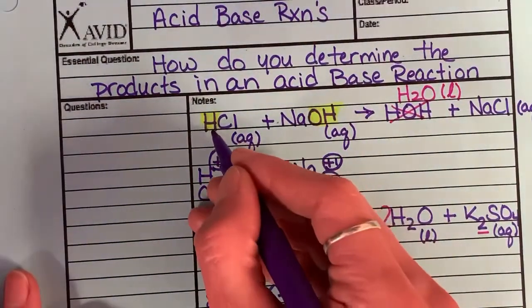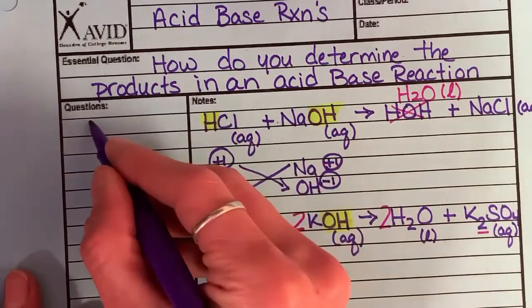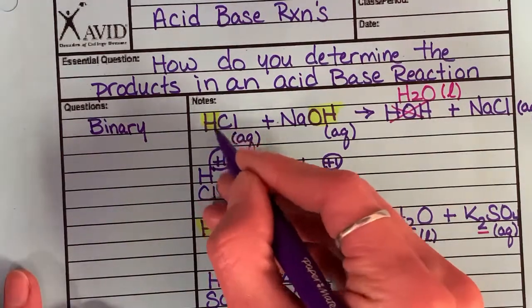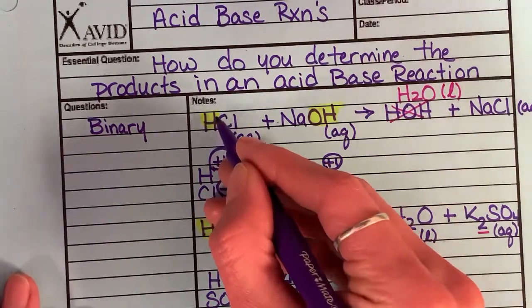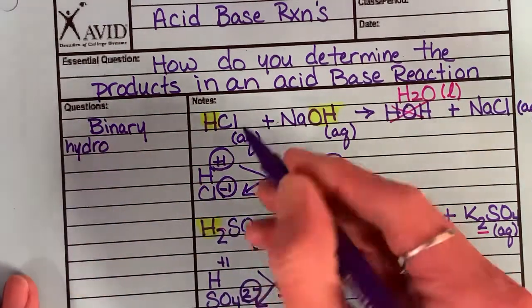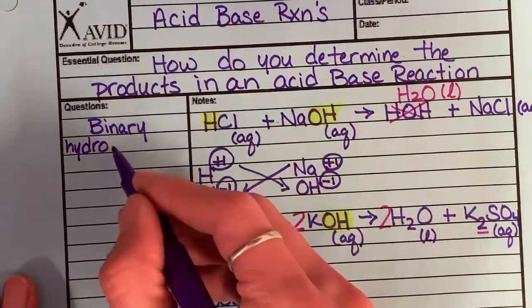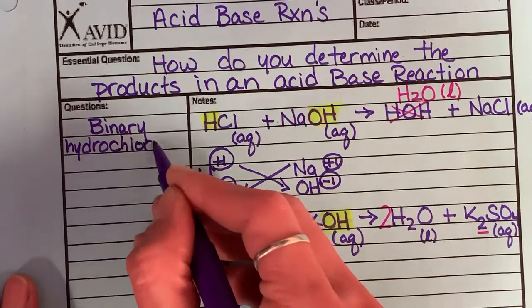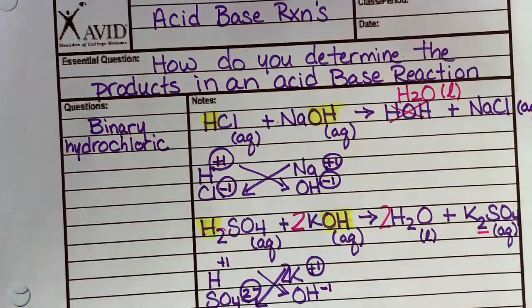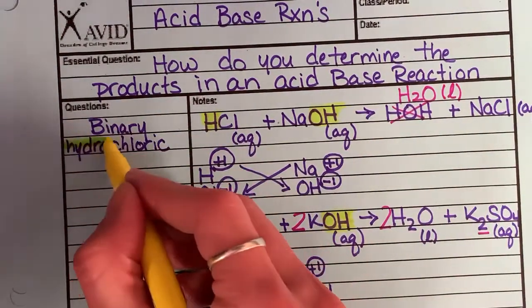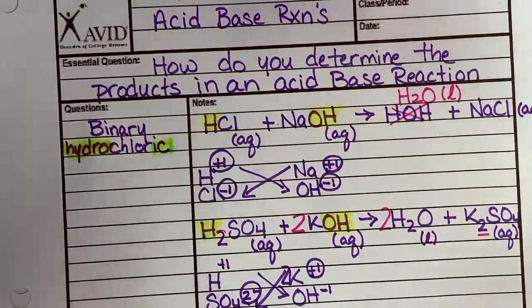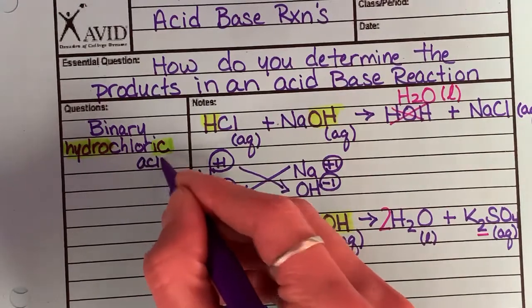If it's just two elements, if it's a binary acid, start with your H. And I call him hydro. Name your anion, which is chlorine. But I change the ending to IC. So he becomes hydrochloric acid.